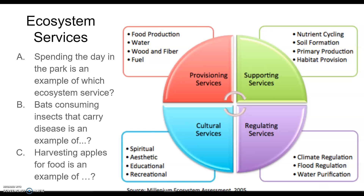The third service ecosystems provide is regulating services, and a lot of these we don't realize an ecosystem is giving us until it's gone. For example, we remove or change the landscape and then experience flooding because the landscape actually helped regulate floods. If all insects go extinct, farmers would have to find a way to pollinate their crops — our ecosystem provides many regulating services.